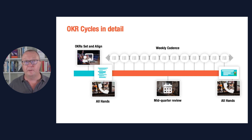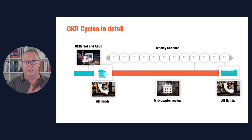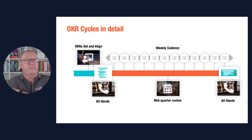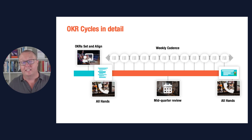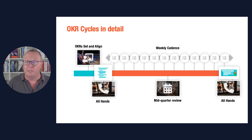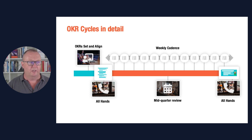These meetings have different audiences. Your setting and aligning would be with your leadership team. Your all hands is with everybody who's involved in these OKRs — if it's a company-level all hands, that's everyone; if it's your group or product level, just those people. You can also integrate this into a larger all hands. The mid-quarter review is usually just the leadership team — you don't need everybody in that; it's more of a discussion meeting. The all hands at the end is with everybody.